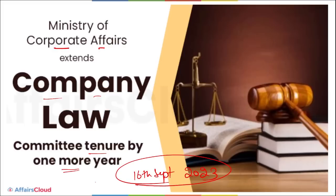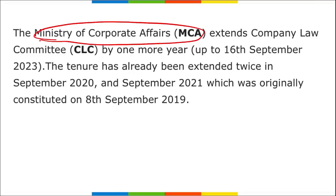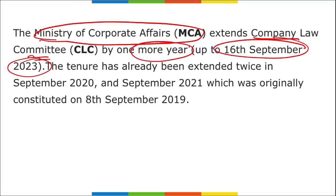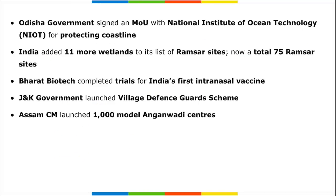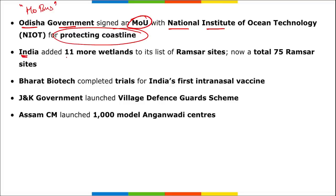The Company Law Committee tenure has been extended by one more year till 16th September 2023. This tenure had already been extended twice - in September 2020 and September 2021 - and it was originally constituted on 8th September 2019. Moving on: the Odisha government has signed an MoU with NIOT (National Institute of Ocean Technology) for protecting the coastline. India also added 11 more wetlands to the Ramsar sites list, bringing the total to 75 Ramsar sites in India.